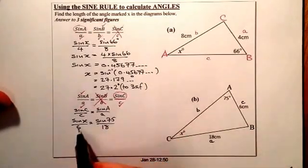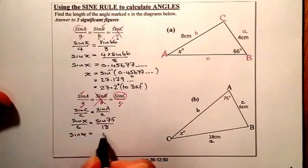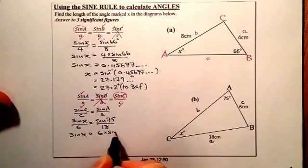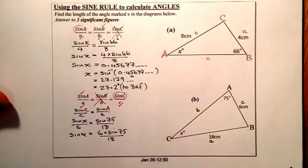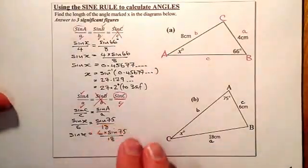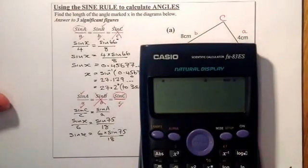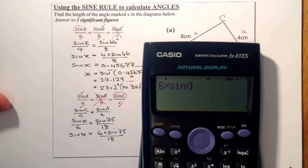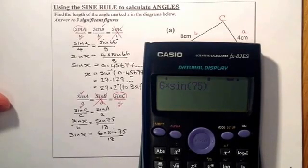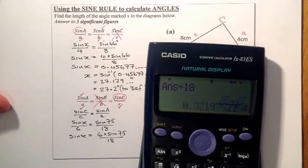Right, from there, I'm going to get rid of this 6 by multiplying over onto that side. So sine x is equal to 6 times sine 75 all over 18. Let's work that through. I've got 6 times sine of 75 equals, divide it by 18. That gives me this answer here.